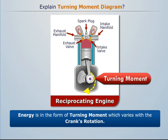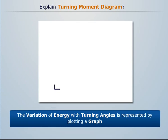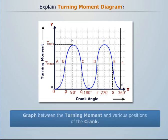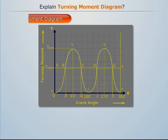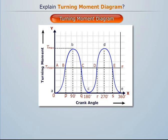The variation of energy with turning angles is represented by plotting a graph between the turning moment and various positions of the crank. This representation is called the turning moment diagram, or crank effort diagram.